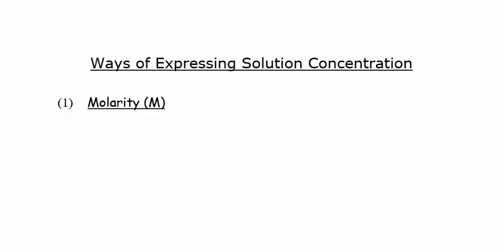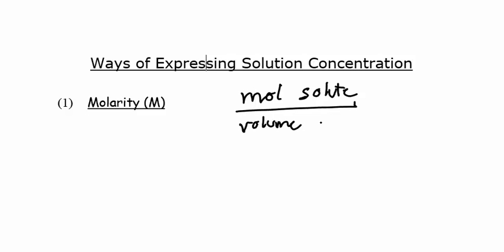When you work with solutions, you often have to do calculations involving concentrations of them, and there are several different ways of expressing concentration for a solution. Each of them has their advantages and disadvantages, and each has a way in which they are used. Molarity is the first one we're going to talk about — it's represented by a capital M and means moles of solute per volume of solution. It's important to note that it's divided by the volume of the solution, not the volume of the solvent. We can express it as moles per liter, and this is generally the most common one used by chemists. One problem with molarity is that the volume in the denominator will change with temperature, so the value can change slightly with temperature.